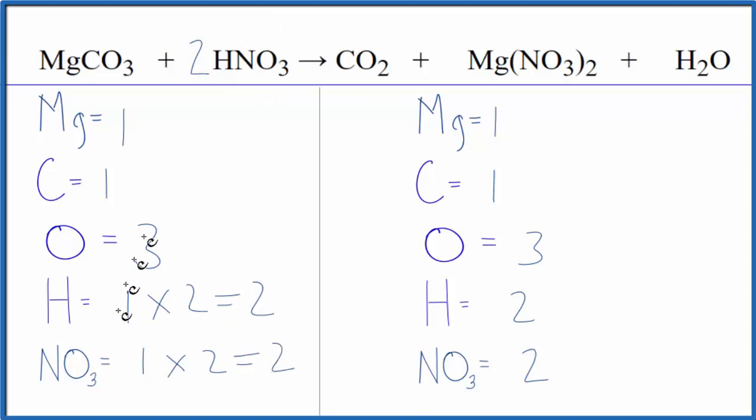So when you're balancing it, if you have something like this nitrate ion here that appears on both sides, you can count that as one thing. It'll make it a little bit easier. It doesn't change what your final answer will be. It just helps make it a little bit easier.